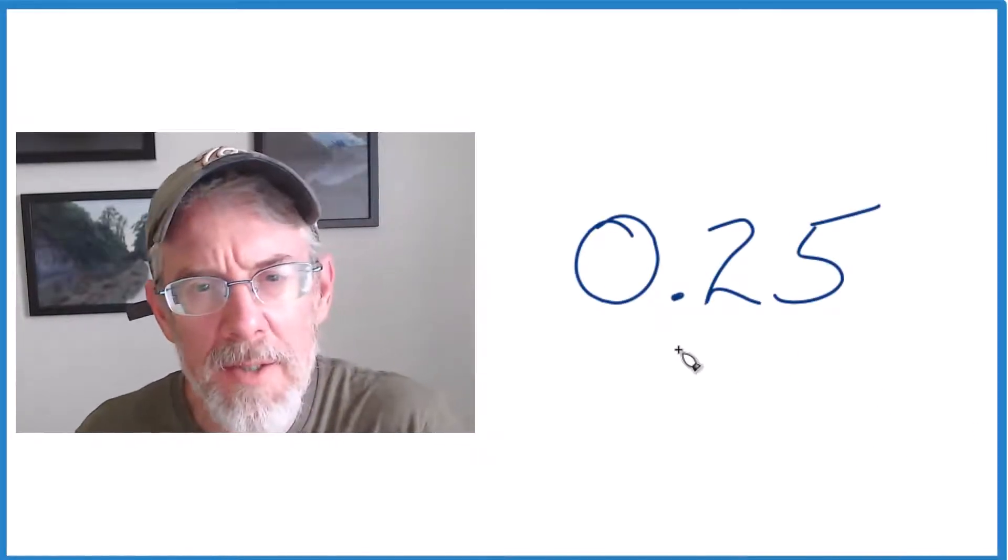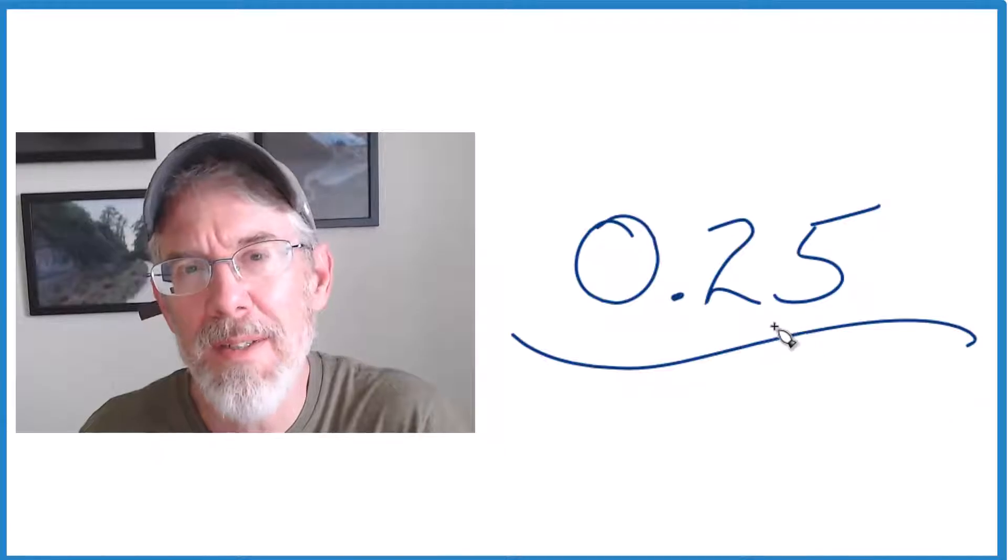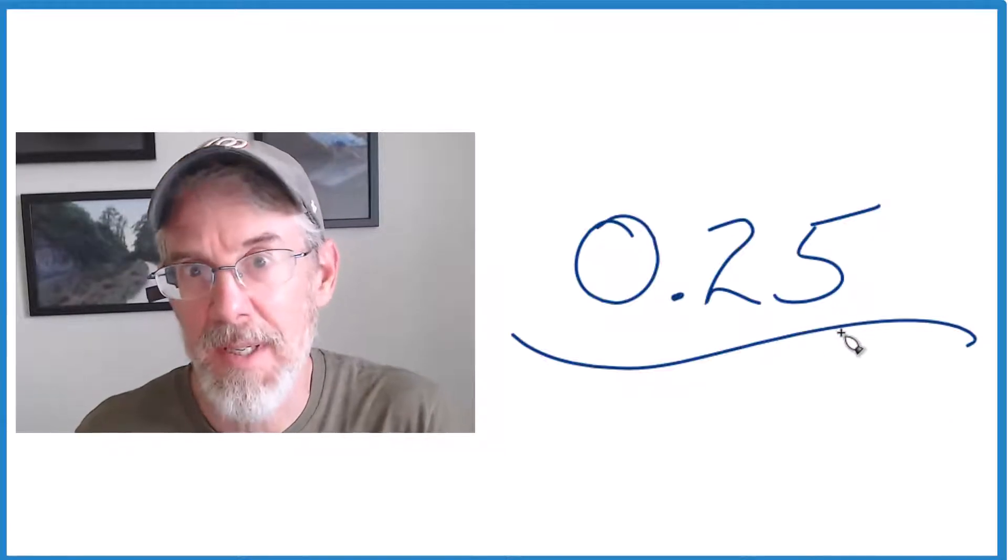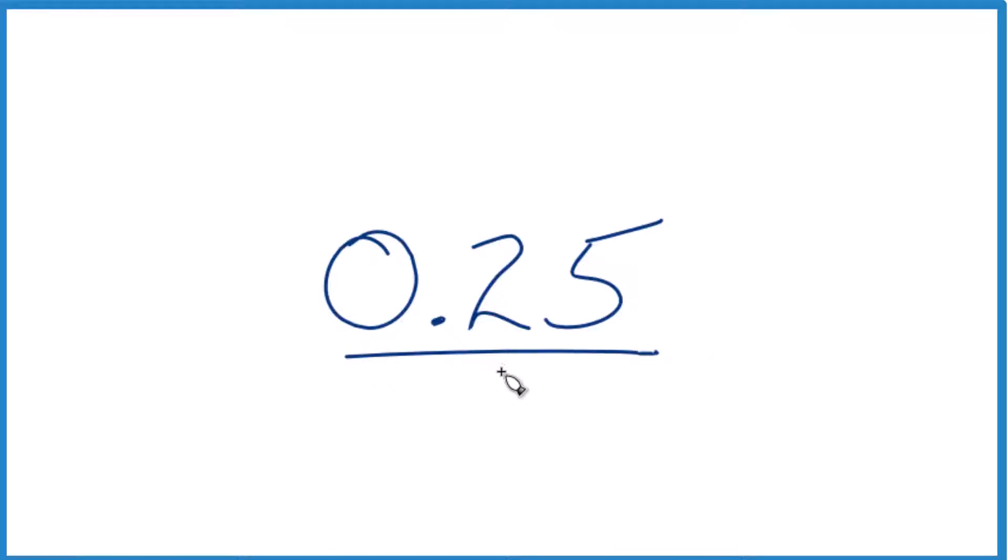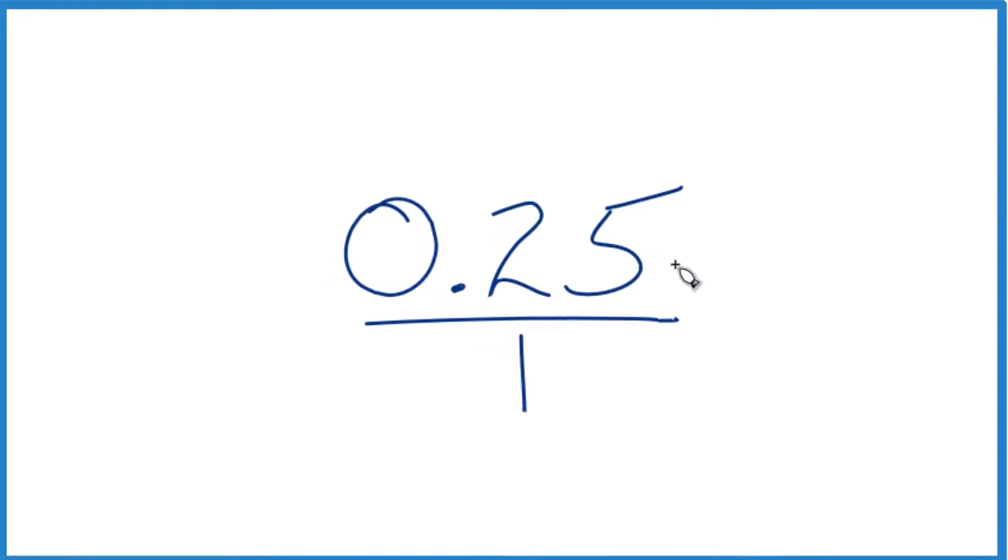Just a quick video on how to change the decimal 0.25 to a fraction. So here's how we do that. First thing we'd like to get this to be a fraction so we could just put it over one. We're dividing by one so it doesn't change anything, gives us the start of a fraction though.